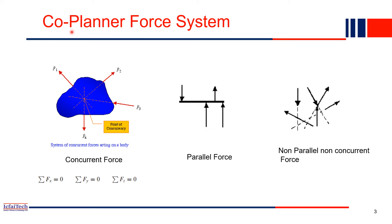A coplanar force system means when all the forces are acting on a single 2D plane. For example, if F1, F2, F3, and F4 are all acting on the same 2D plane, that is a coplanar force system. If all the forces are acting through a single point, we call them concurrent forces. If all the forces are parallel to each other, we call them parallel forces. Please note: if all forces on a body are concurrent — passing through a particular point — or if all forces are parallel to each other, then this body may not be stable.